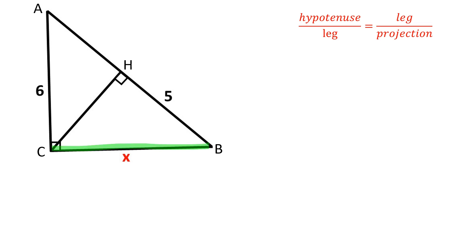Each leg of a right triangle is the mean proportional between the hypotenuse and the projection of the leg on the hypotenuse. AB over CB is equal to CB over BH.